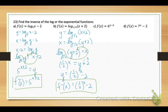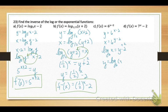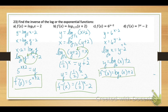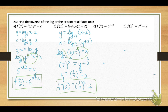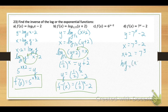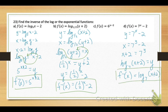For part c: we have an exponential. Replace f(x) with y, interchange variables x and y, then rewrite the exponential in log form: log base 6 of x equals y minus 2. Add 2 over — inverse function equals log base 6 of x plus 2. For number 7 (part d): replace f(x) with y, interchange variables, move the 2 to isolate the exponential, rewrite in log form: log base 7 of (x plus 2) equals y. Inverse function equals log base 7 of (x plus 2).